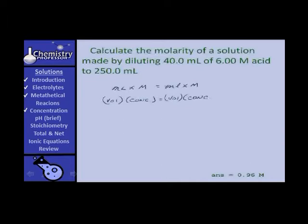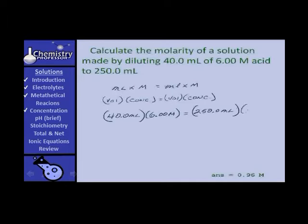The key to that is remembering always to make your volumes in the same units and your concentrations in the same units. We take 40 milliliters of six molar acid, and that equals a volume of 250 milliliters of an acid whose concentration we are trying to determine. I'll call it Y, and when I solve for Y, I find that Y is 0.96 moles per liter — a rather straightforward problem.